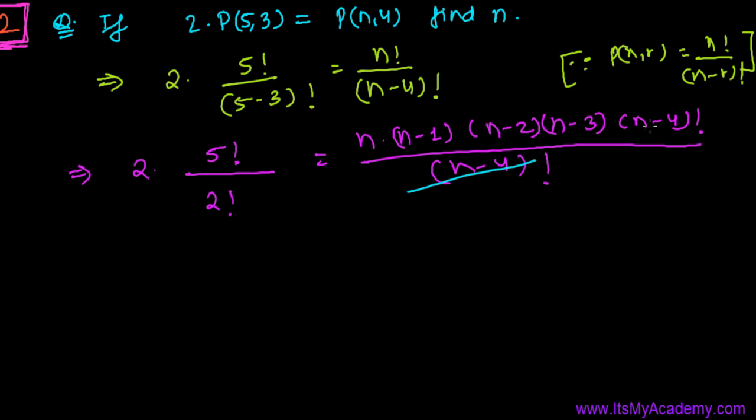Now you can easily cancel these two things, and now you can write 5 factorial, that is 5 times 4 times 3 times 2 times 1. Similarly here, n times n minus 1 times n minus 2 times n minus 3.